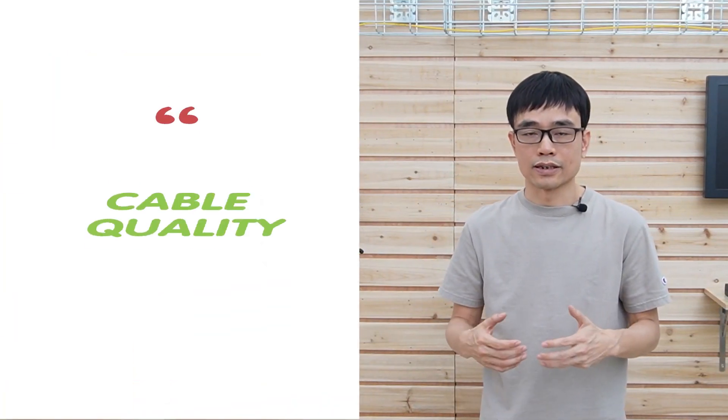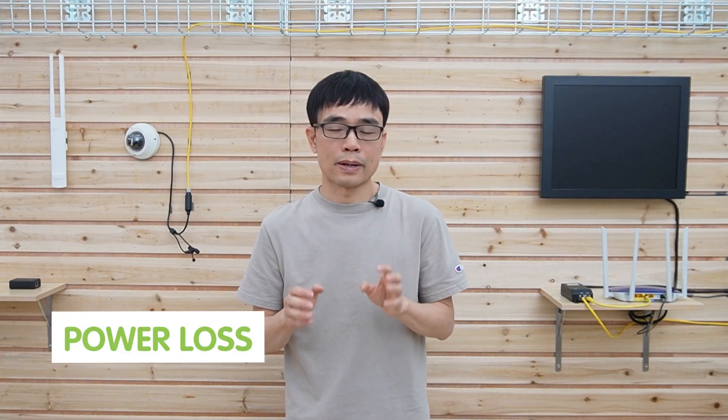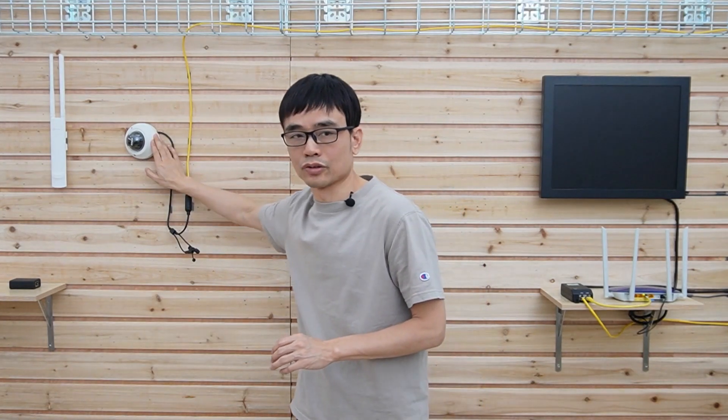And the next thing is about the cable. The cable is quite important because the power needs to go through this cable, and there's always power loss. If you just use low-quality cable, such as the CCA type, it will generate serious power loss. You may not have enough power at the edge.